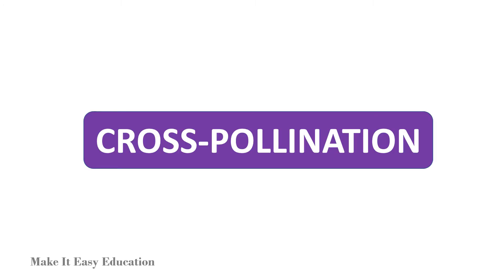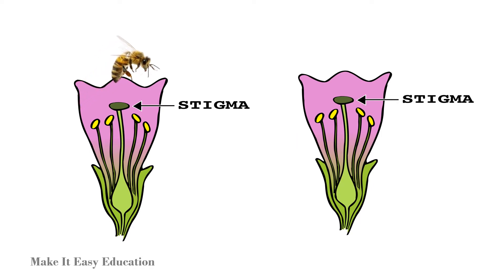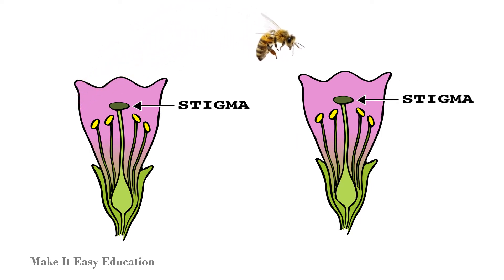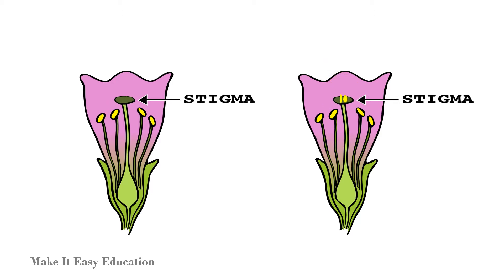Cross-pollination. In cross-pollination, the pollen from the anther of a flower on one plant is transferred to the stigma of the flower on another plant of the same species.